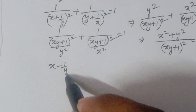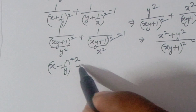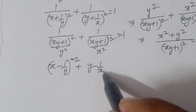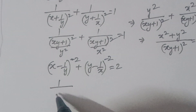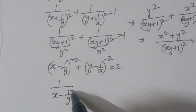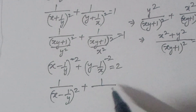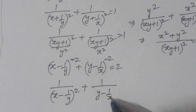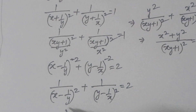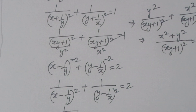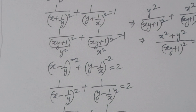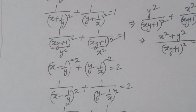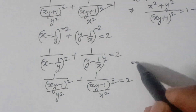The second equation is (x - 1/y)^(-2) + (y - 1/x)^(-2) = 2. Taking the reciprocals of the negative powers, this becomes 1/(x - 1/y)^2 + 1/(y - 1/x)^2 = 2. Changing the powers: (xy - 1)^2/y^2 + 1/(xy - 1)^2/x^2... wait — rewritten as (xy - 1)^2 in the denominator: y^2/(xy-1)^2 terms appear.